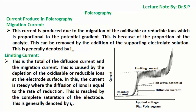Migration current: this current is produced due to the migration of oxidizable or reducible ions, which is proportional to the potential gradient. This can be removed by the addition of a supporting electrolyte solution, and is denoted by IME. Limiting current: this is the total of the diffusion current and the migration current. It is caused by the depletion of oxidizable or reducible ions at the electrode surface. The current is steady where the diffusion of ions equals the rate of reduction, and this is reached by complete saturation of the electrode. It is denoted by IL.